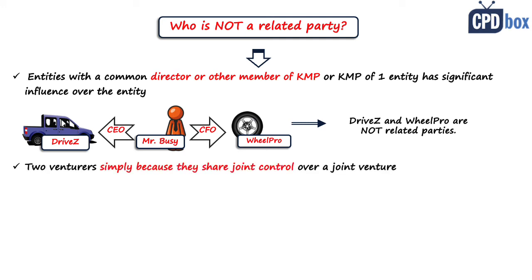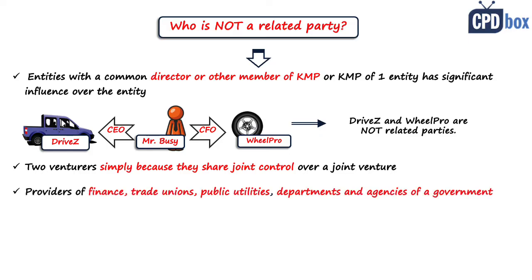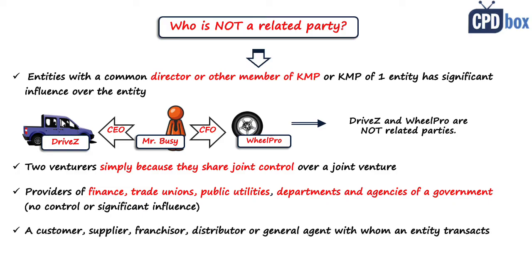Another situation: two ventures are not related parties simply because they share joint control over a joint venture. Also not related parties: providers of finance, trade unions, public utilities, and departments and agencies of a government that does not control, jointly control, or significantly influence the reporting entity — simply because of their normal dealings with it. Finally, a customer, supplier, franchisor, distributor, or general agent is not a related party even if some economic dependence arises. Having only one customer who is otherwise unrelated does not make them a related party.